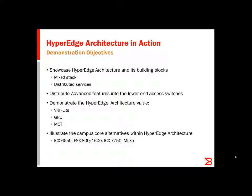In this demo, we will showcase advanced routing with VRF Lite, GRE, and MCT to scale out the HyperEdge architecture. We will show the alternatives in the core for this campus solution — that is, the ICX-6650, the FastTitan SX-800 and 1600, MLXE, and the ICX-7750.